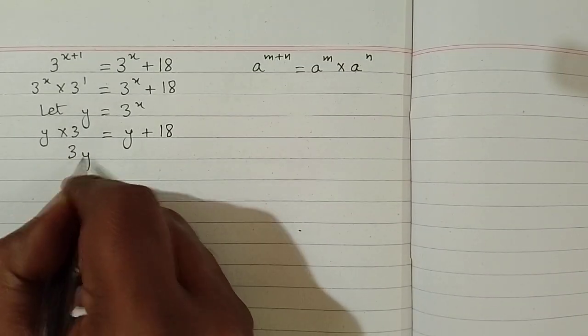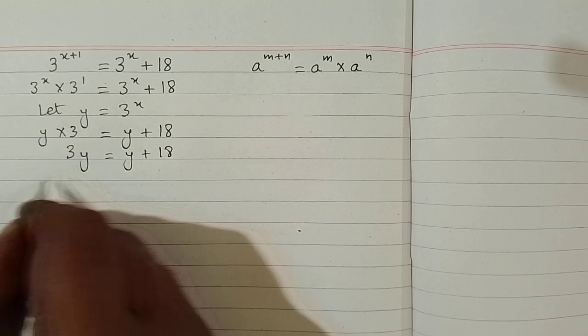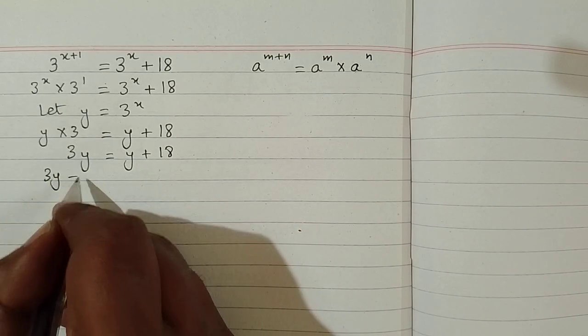So we have 3y is equal to y plus 18 and now we can take this y on this side so it becomes minus y.